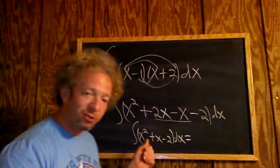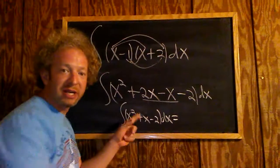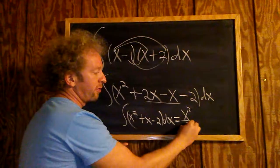All right, now we can integrate using the power rule. So all you do is you add 1 to the exponent. So there's a 2 here, so 2 plus 1 is 3. And you divide by that same number. So 2 plus 1 is 3, so we get x cubed over 3.